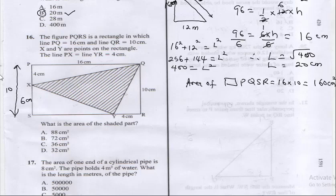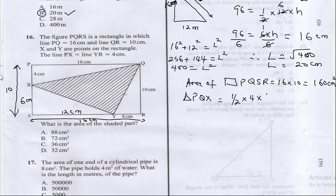From here to here is 16, meaning this side is also 16 cm. So if here is 4, that means this part is 12 cm. Having established that, let's find the areas of the unshaded triangles. Triangle PQX equals half times base 4 times height 16, which gives us 32 cm squared.